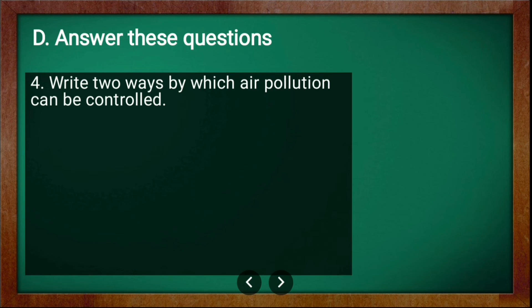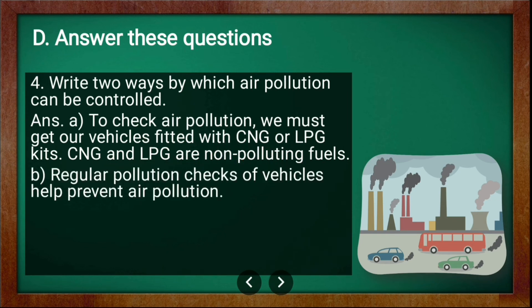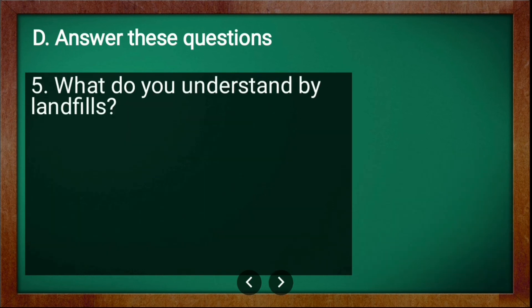Fourth question: write two ways by which air pollution can be controlled. To check air pollution, we must get our vehicles fitted with CNG or LPG kits because they are non-polluting fuels. Regular pollution checks of vehicles help prevent air pollution. Also, tall chimneys with filters must be fitted in factories to release smoke and gases very high away from the population.